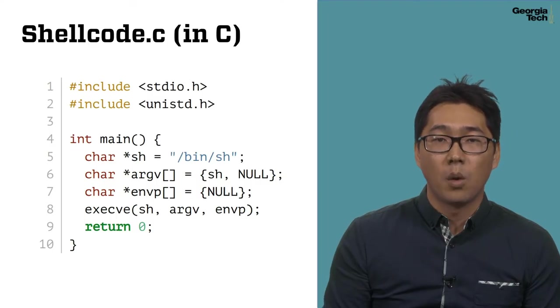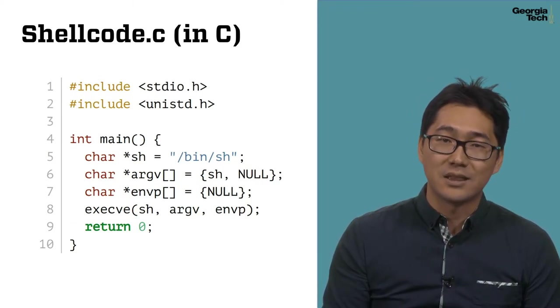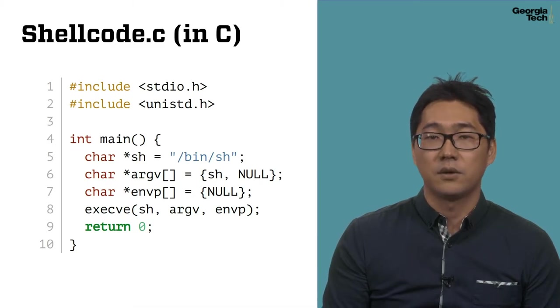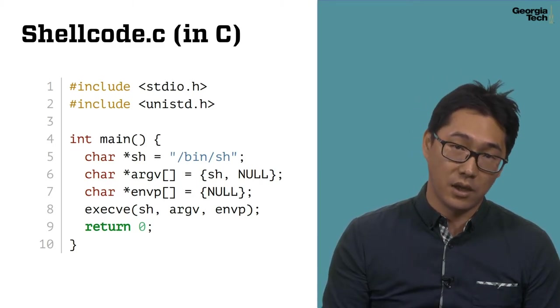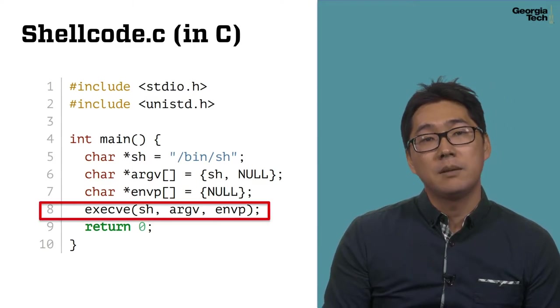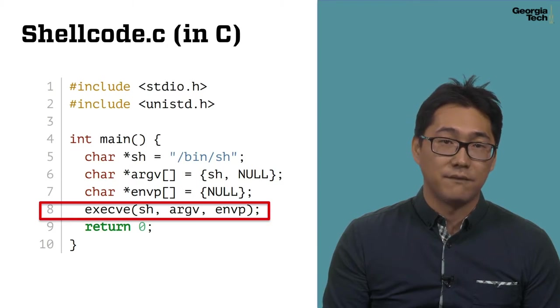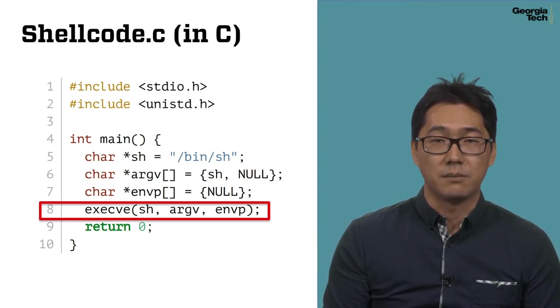Another important goal of this week's lab is to learn how to write shellcode. Shellcode is nothing but a payload for exploits that typically invoke a shell, so we call it shellcode. In plain C, it's simply a single function call, execv, with bin shell as a program name.